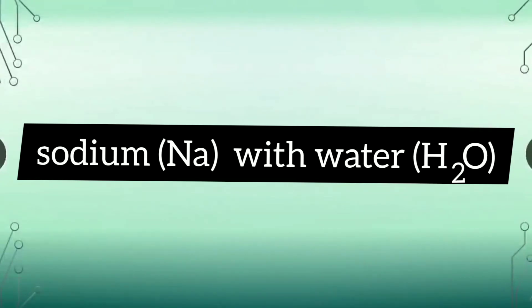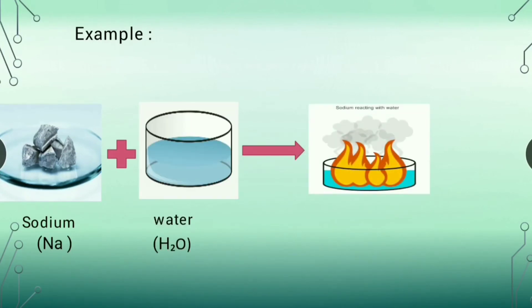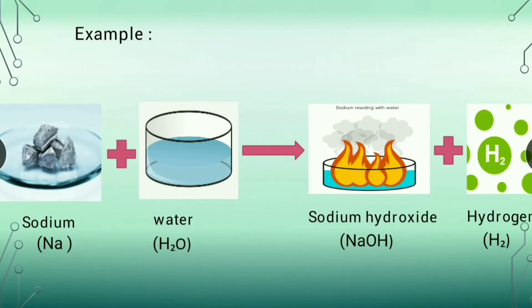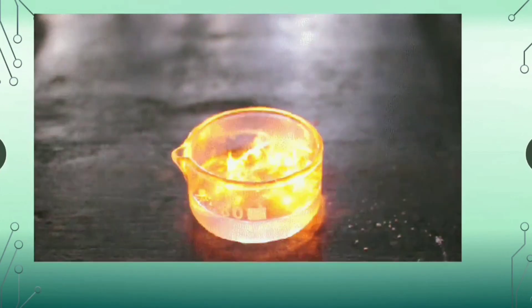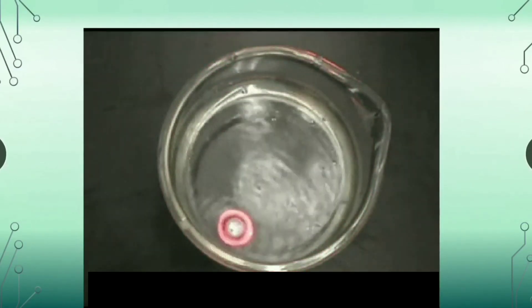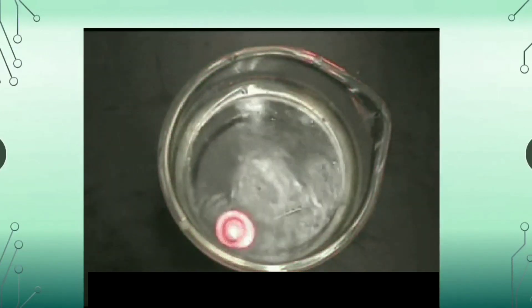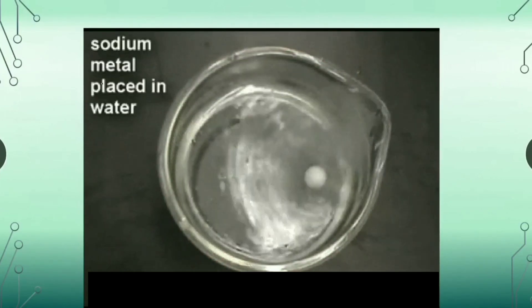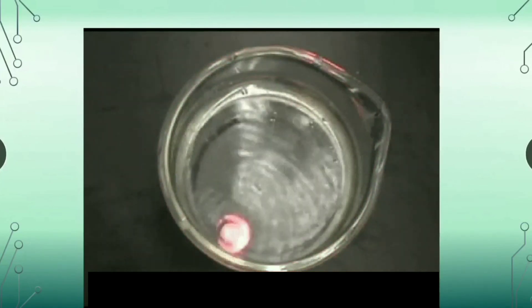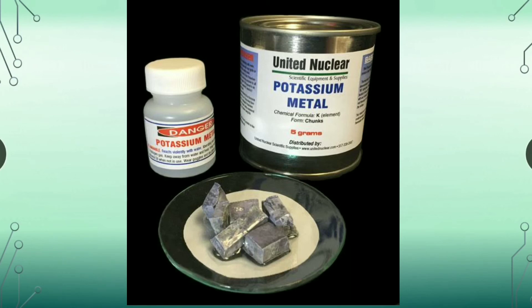When sodium metal reacts with cold water, it reacts violently, forming sodium hydroxide solution and hydrogen gas. The gas liberated is hydrogen. Sodium reacts with moisture, oxygen, and other gases present in air, so if exposed to air it gets spoiled. To prevent its reaction with moisture and other gases, sodium metal is always stored under kerosene. Potassium metal is also highly reactive and is likewise stored in kerosene.